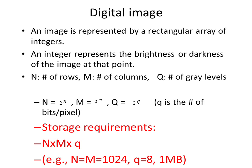An image is represented by a rectangular array of integers. If an image has N rows and M columns and Q is the number of gray levels equal to 2^q, where q is the number of bits per pixel, then we can obtain storage requirement for a particular image using the formula N×M×q. For example, if the number of rows and columns are 1024 and it is an 8-bit image, then storage space is 1 megabyte.